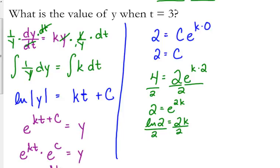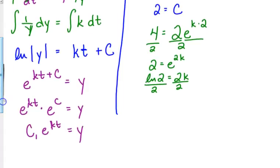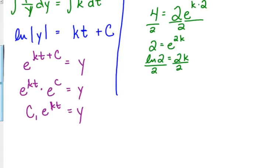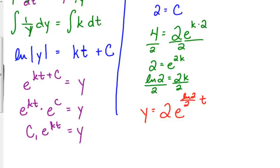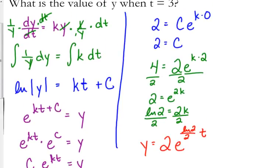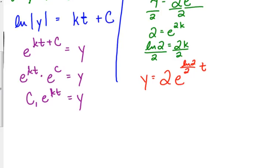So the natural log of 2 divided by 2 is equal to k. Now, don't divide those 2s. It's not 2 divided by 2. It's the natural log of 2 divided by 2. So our particular solution is y is equal to, we found out that c was 2, e to the k is the natural log of 2 divided by 2 times t. That's our particular solution to this differential equation. And we can then use that to find the value of y when t is 3.